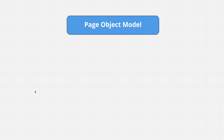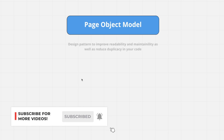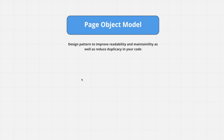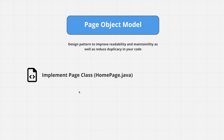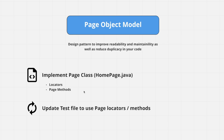Welcome back. In this video we're going to take a look at how we can implement page object model for our existing tests. Page object model is a popular design pattern to improve readability and maintainability, and it helps in reducing duplicacy in your code. We're going to implement it by creating a new class called the page class, and we can name this HomePage.java. Within our page class we're going to add our locators as well as our page methods, and then use them in our test file by importing the page class.